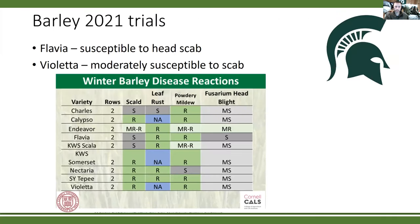Another trial from North Dakota looks at split applications — Miravis ACE at heading followed by Caramba four to seven days post, compared to Miravis ACE at full head alone — to see if split applications can further reduce vomitoxin accumulation. Of course that means additional costs, and the economics need to factor in whether the second application pays for itself. This year, Tara tracked down Flavia variety, which is expected to be more susceptible to head scab, to help drive more disease data and reinforce the variety selection message.